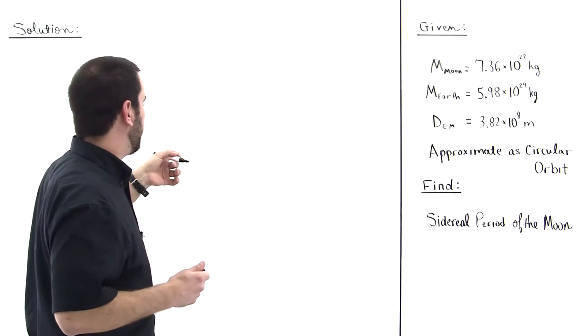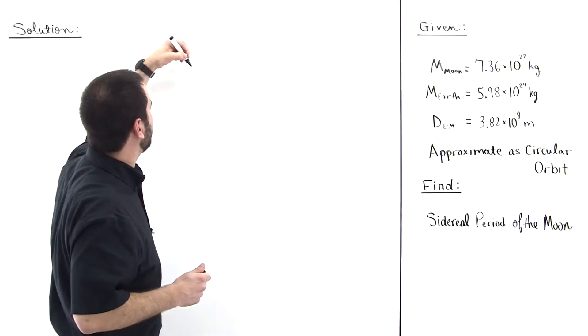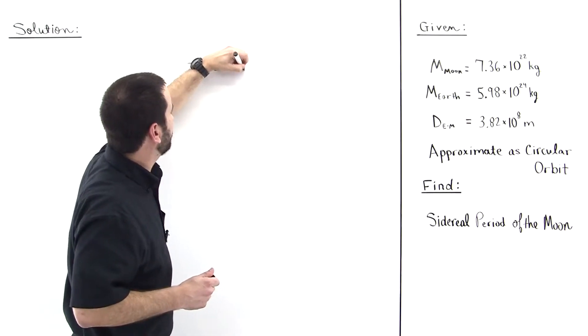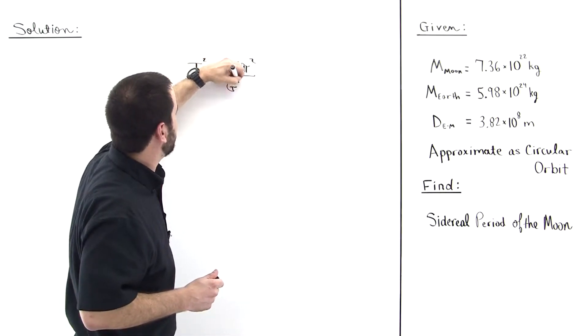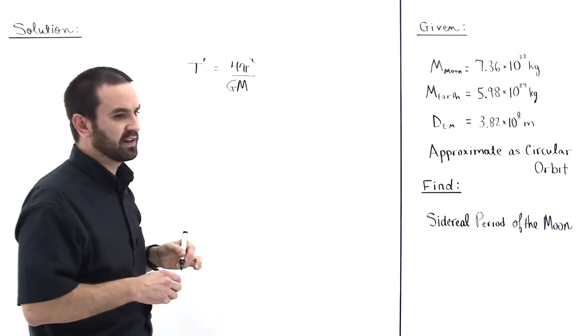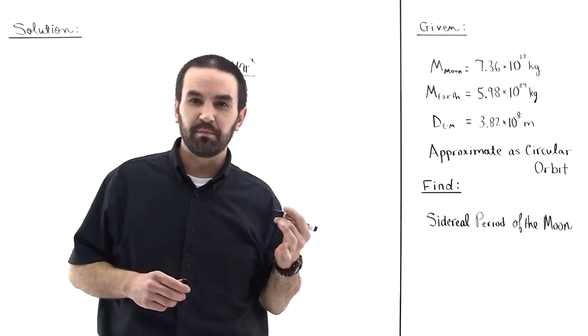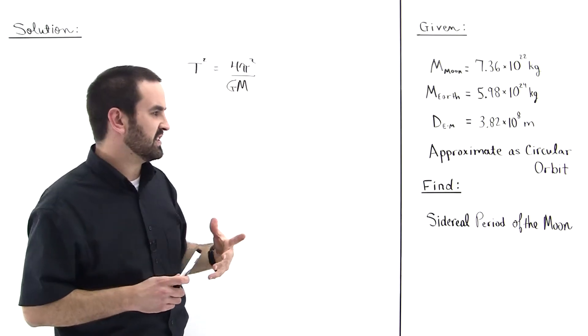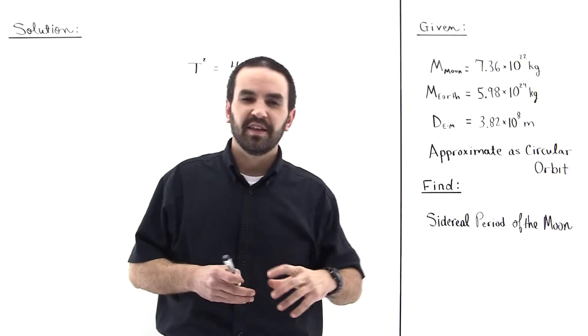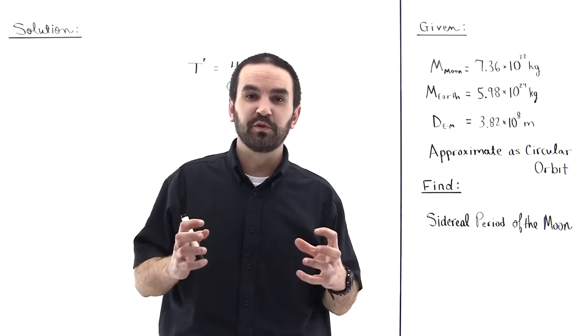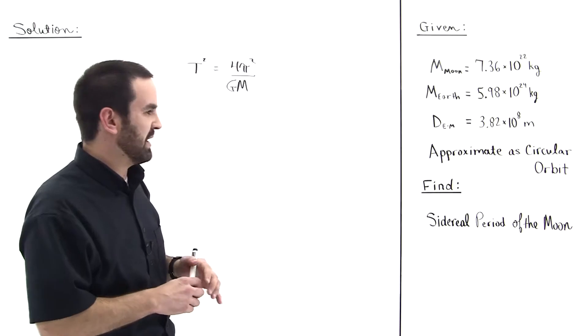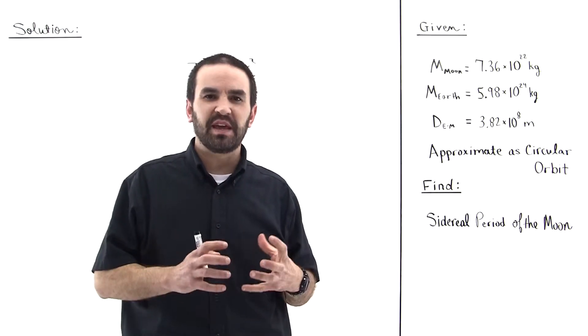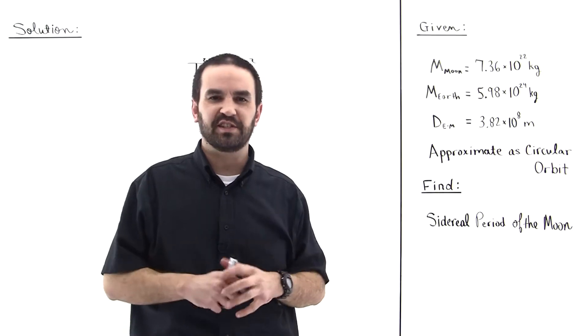We want to calculate the period so we can use Kepler's third law. We can say that T squared is equal to 4π squared divided by g times the mass of the central object. The central object here will be the earth, because the moon is going around the earth for all intents and purposes. They're actually orbiting the center of mass of the earth-moon system, but because the earth is about 81 times more massive than the moon, we can approximate the central object as the earth itself.